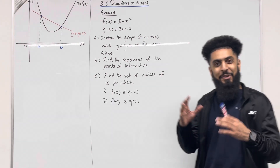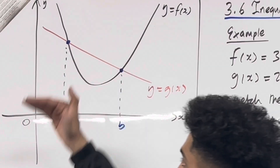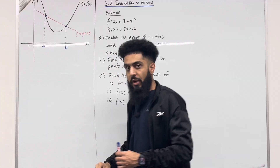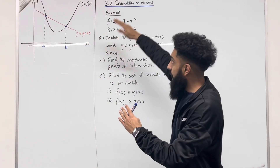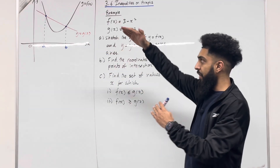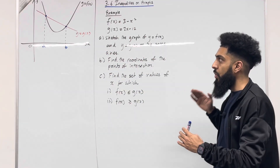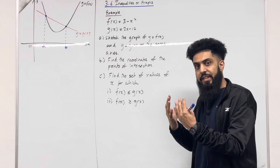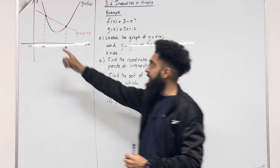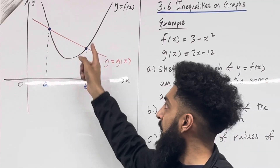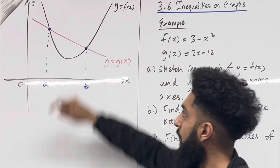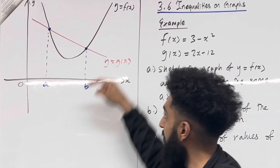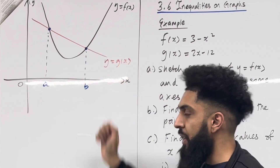I'm going to start this teaching video by going through this coordinate grid and these two graphs. I've got the curve y = f(x) and I've got the straight line y = g(x). These two graphs intersect at two points. At this point the x-coordinate is a, and at this point the x-coordinate is b.